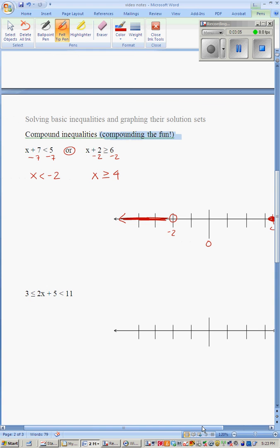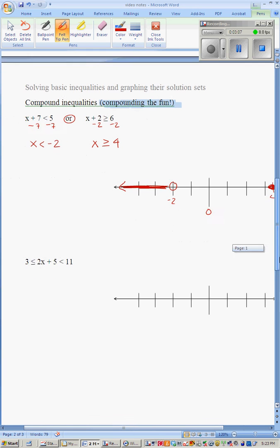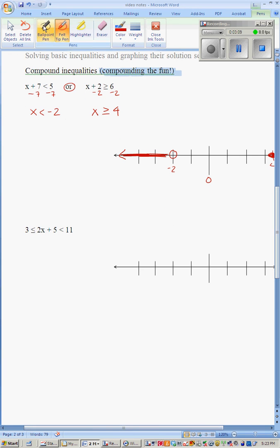But what happens with and? And is my favorite, because you can solve two problems at once. If we want to isolate this x, we want to get rid of the 5 by subtracting it. But we need to subtract it from all areas. So we get negative 2 over here, less than or equal to 2x, less than 6.